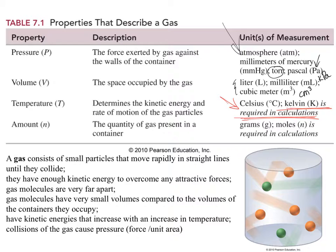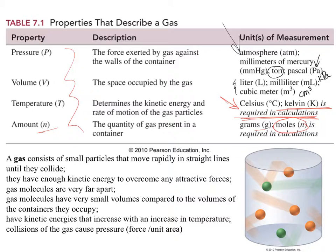And finally, N. N is the amount of gas, and in fact it typically is in moles. G would be in grams, so N is moles, and we'll be using moles as our quantity of gas present. So all of these variables or factors play a role in what we know as our gas law problems and how gases behave.